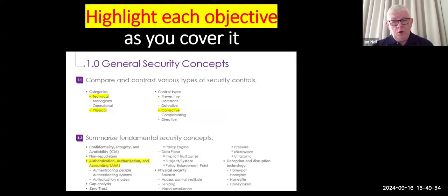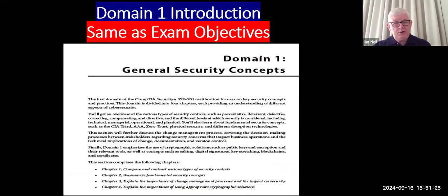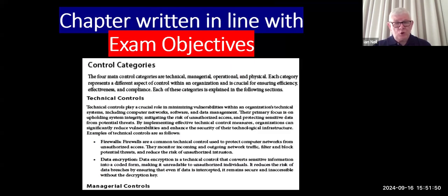When you get the index, it's the same as the objectives. The main one is objective 1.1, in the same order as the exam objectives. This makes it easy to understand and highlight. The domain one introduction is also the same as the CompTIA exam objectives. The chapter and title are the same as the exam objectives — I've taken the exam objective title and made it the chapter title, and you can see it's following the exam objectives. The chapter is also written in the same order as the exam objectives.